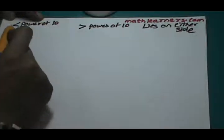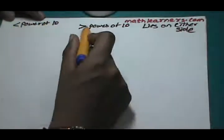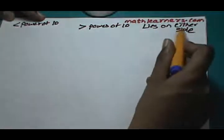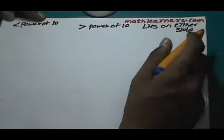This will generate 3 possibilities: when the numbers are less than power of 10, when the numbers are greater than power of 10, and when the numbers lie on either side of the power of 10.